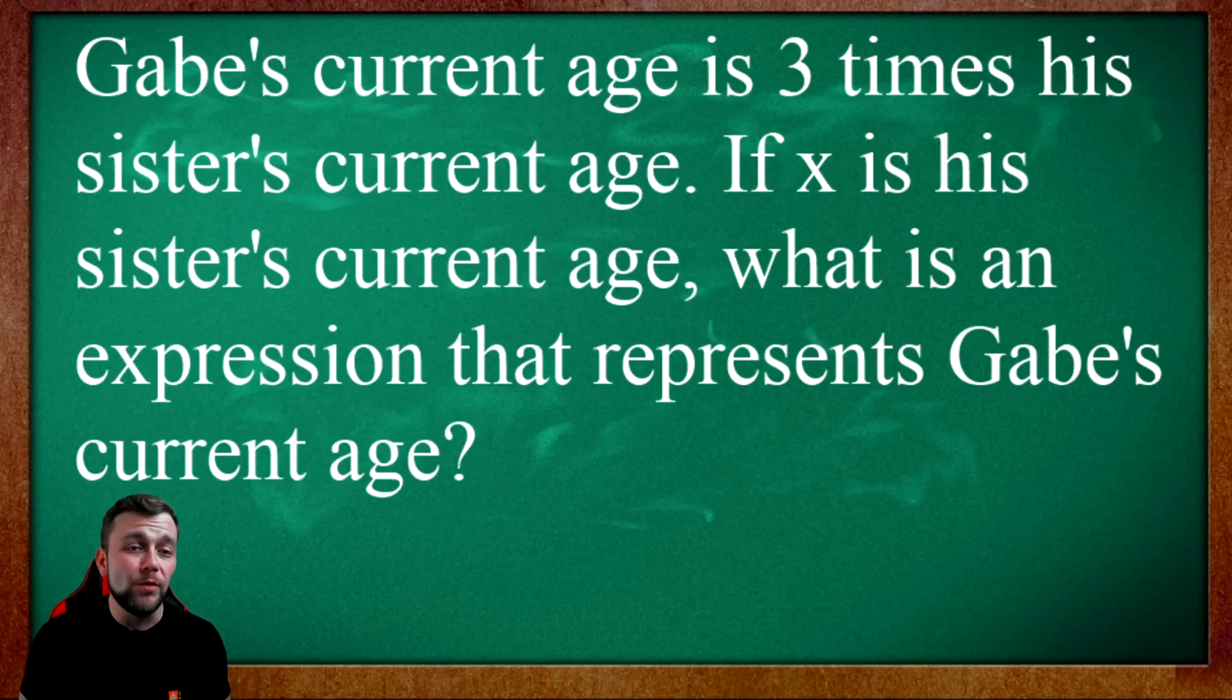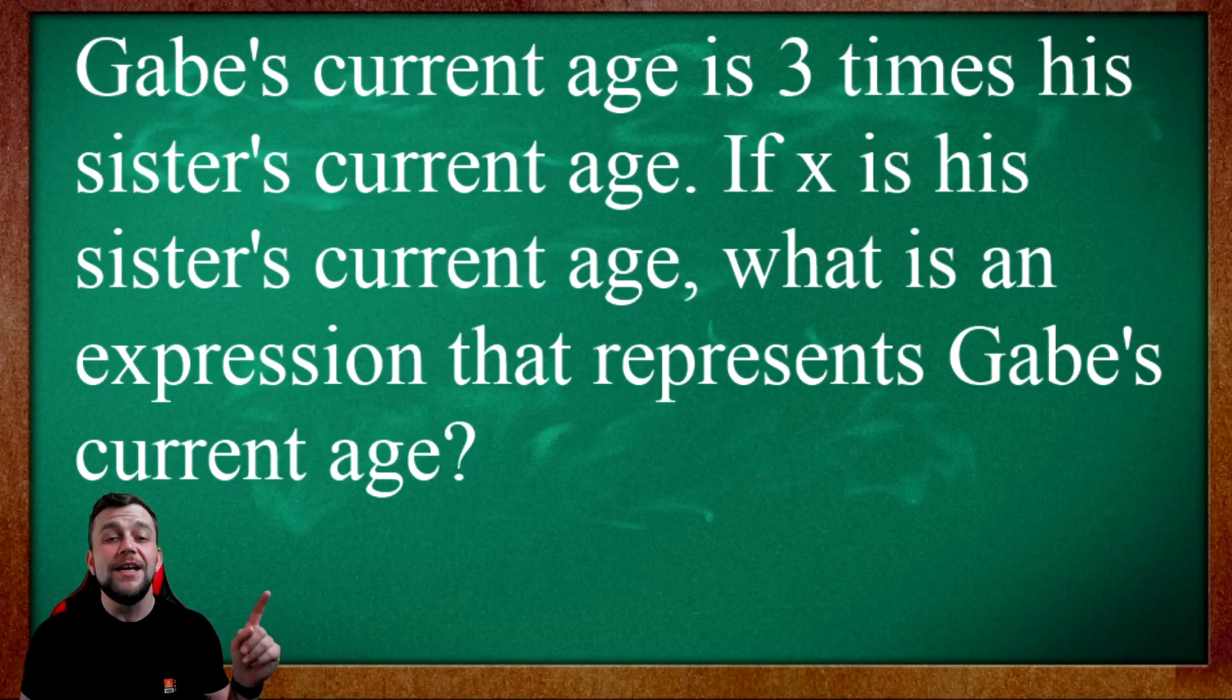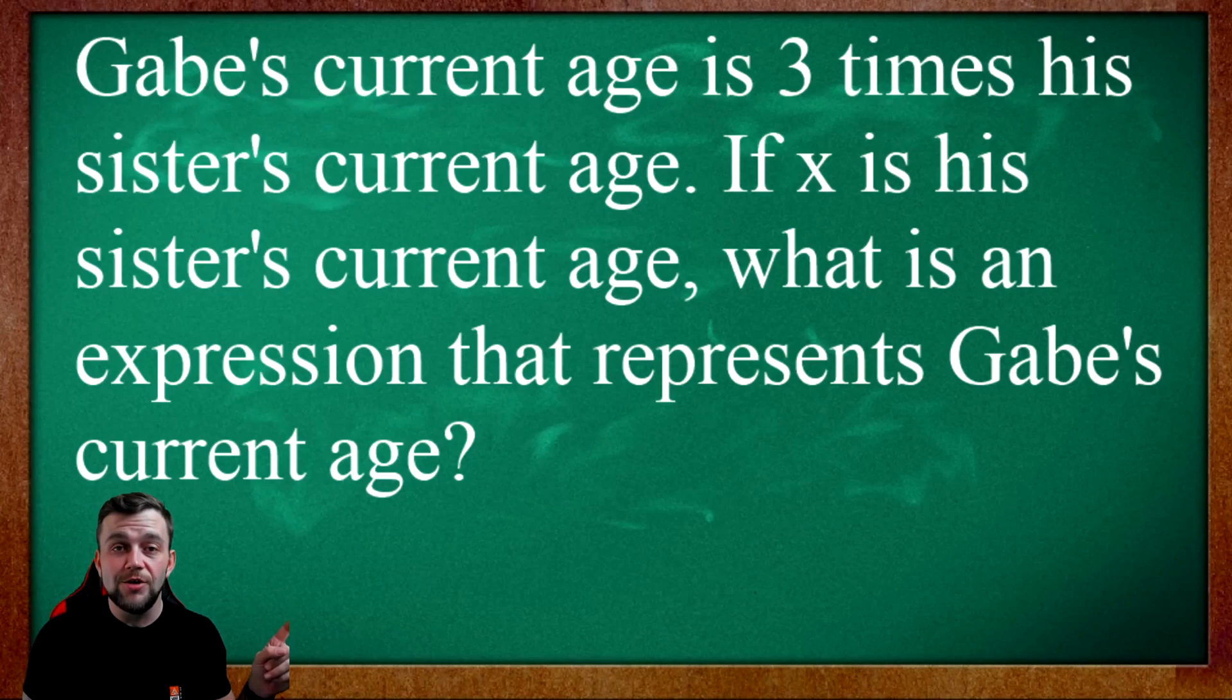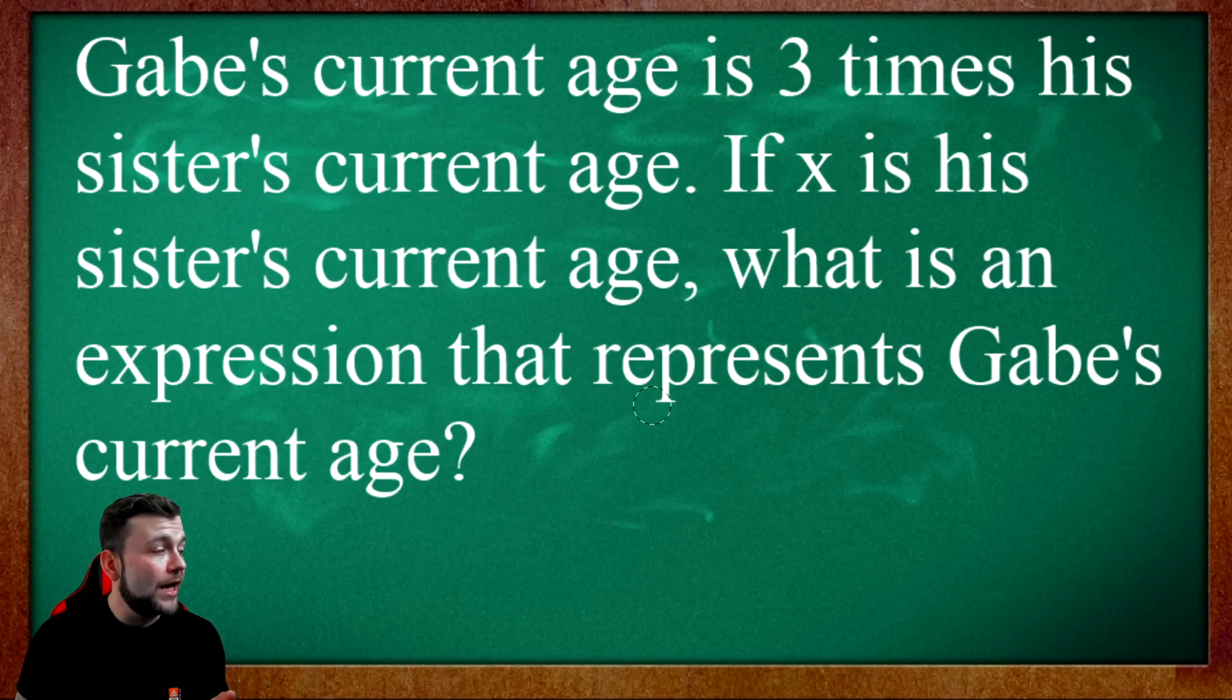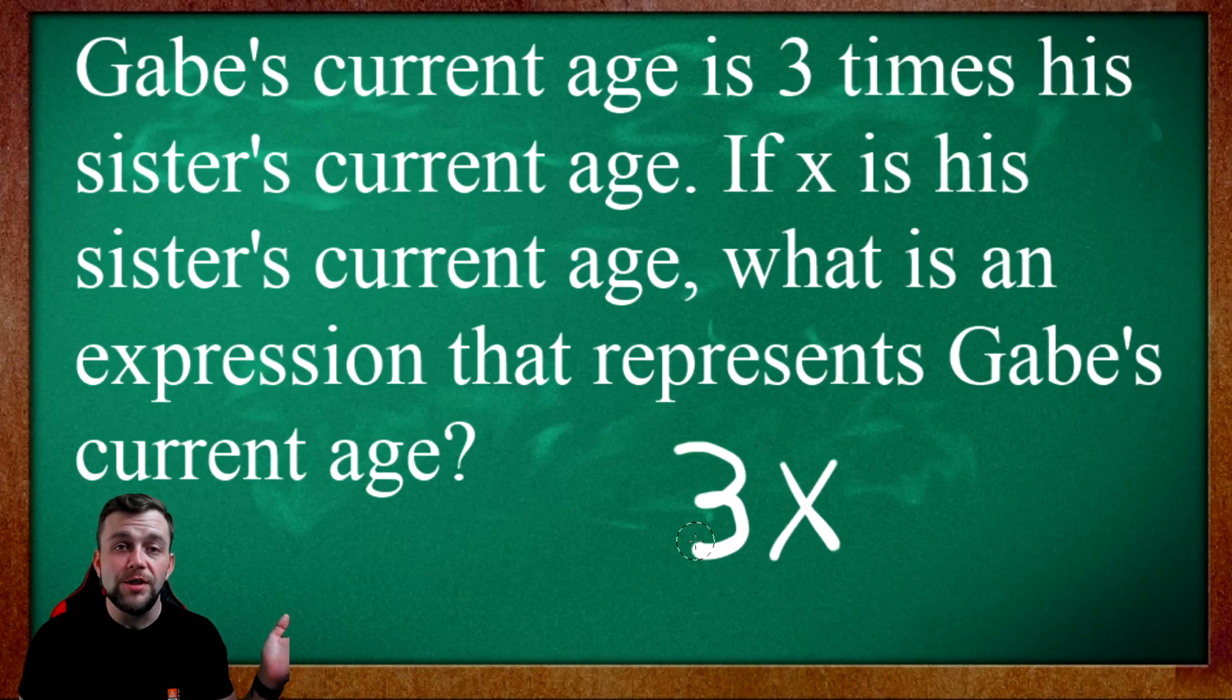Let's go through this word problem. Gabe's current age is 3 times his sister's current age. If x is his sister's current age, what is an expression that represents Gabe's current age? The key here is that Gabe's current age is 3 times his sister's current age. So what do we know his sister's age is? Well, it is x. So let's write that down. Now that we have that written down, it's 3 times x. So we just put the 3 in front. That's the expression that represents this word problem.